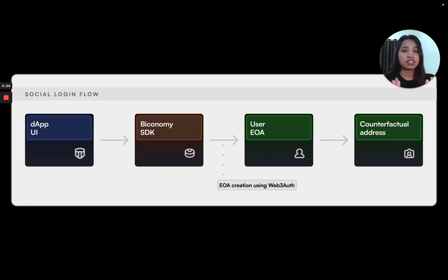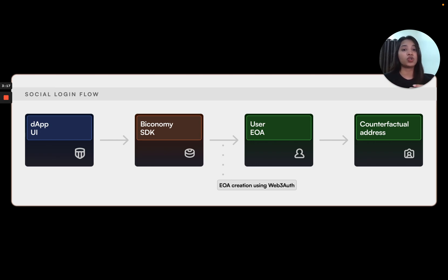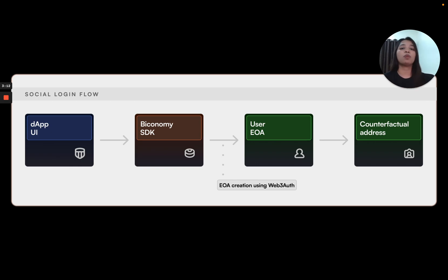As long as the email is the same for the dApp, the same account will be generated for all social accounts. As you can see in this flow, a dApp generated with the Biconomy SDK will allow you to call the Web3Auth package, which will allow you to deploy a smart contract wallet on top of your EOA or social login.